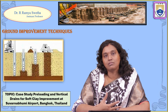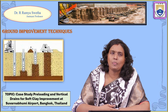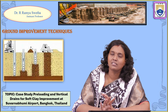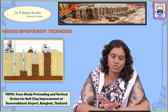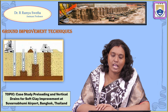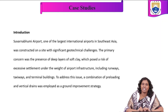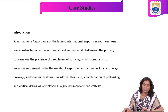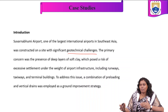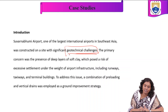We will explore what kind of properties are involved in that construction, what kind of soil it has, what laboratory tests were conducted, and what procedure we follow for getting the desired properties. This case study covers preloading and vertical drains for soft clay improvement at Suvarnabhumi Airport, Bangkok, Thailand. It is one of the largest international airports in Southeast Asia, constructed on a site with significant geotechnical challenges. The Thailand government selected that locality based on needs, but that area faced significant geotechnical challenges.